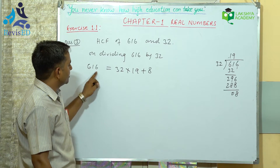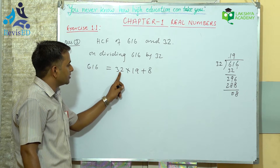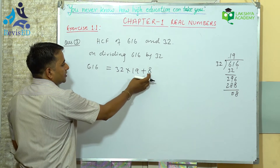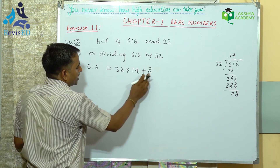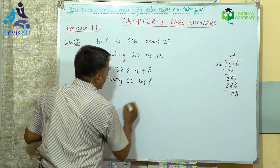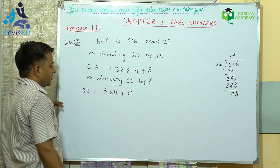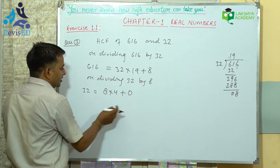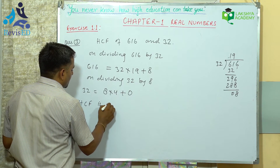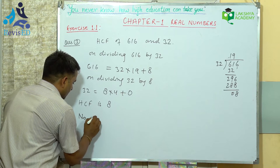On dividing 616 by 32, we get: dividend equals divisor into quotient plus remainder. Since we are not getting remainder as 0, we again divide the divisor by the remainder — dividing 32 by 8. So 32 equals 8 into 4 plus 0. Here 32 is completely divisible by 8, so the remainder is 0. Since we are getting remainder as 0, the HCF is 8. So the number of columns would be 8.